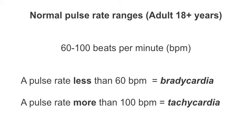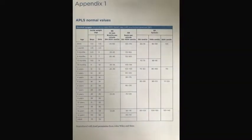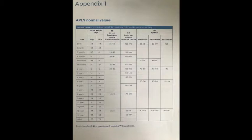A normal pulse rate for an adult is a range between 60 to 100 beats per minute. A pulse rate below 60 beats per minute is known as bradycardia. A pulse rate more than 100 beats per minute is known as tachycardia. Normal ranges for infants and children are dependent on specific age ranges. Therefore, as child nurses, please ensure you read up and familiarise yourself with the specific ranges identified using academic resources from the module.